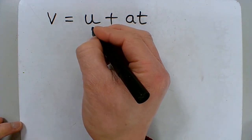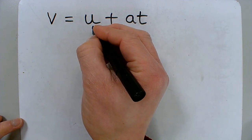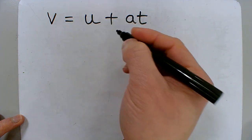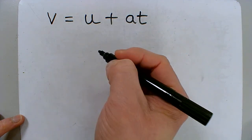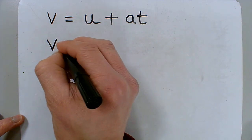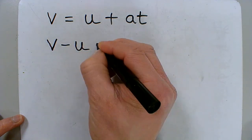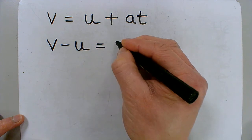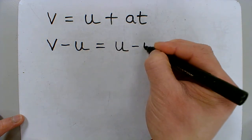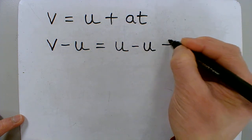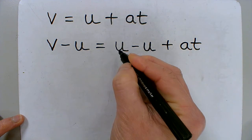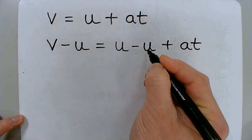If I have to get rid of u on this side, that is the same as saying I have to take away. So whatever I do on one side, I do to the other side. So I can also write this as v minus u equals u. I'm trying to get rid of u. So I have to minus u plus at.